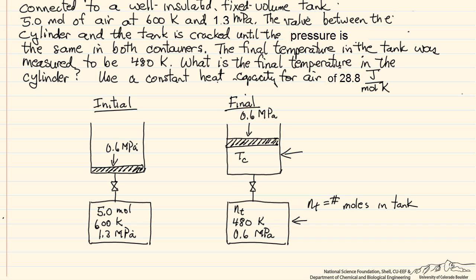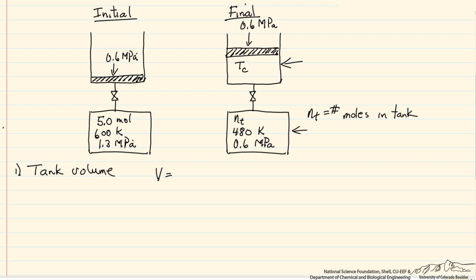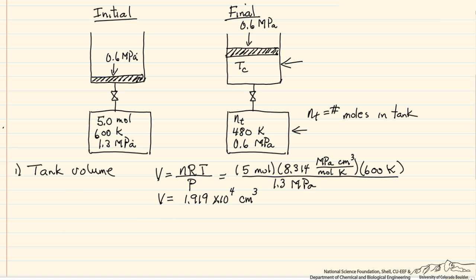We're going to use a combination of ideal gas law and energy balance to do this calculation. First, we need to know how many moles are in the tank at the end. To do this, let's determine the tank volume. Assuming an ideal gas, we have the pressure, temperature, and number of moles initially, so: V_tank = n × R × T / P. Substituting the numbers in with correct units gives us the volume of the tank in cubic centimeters.